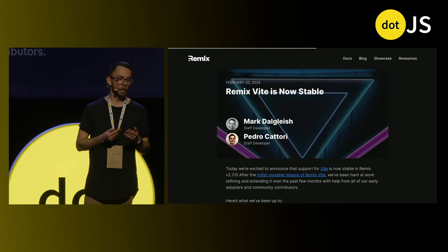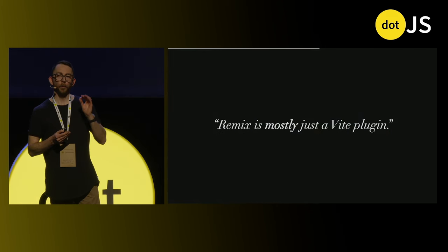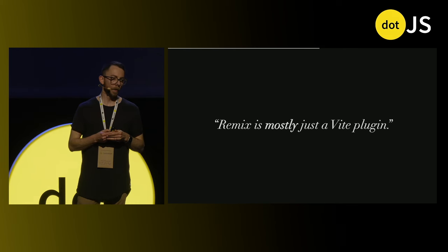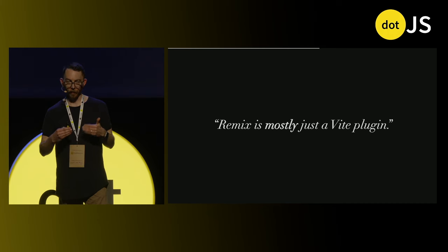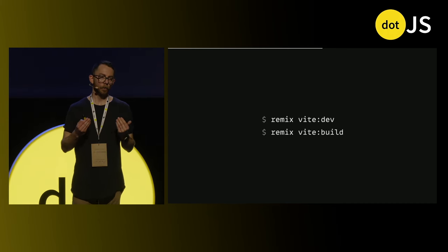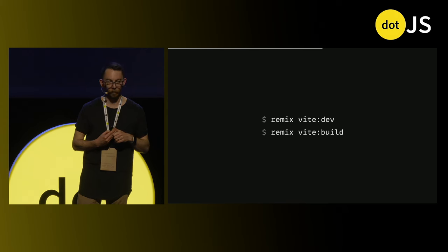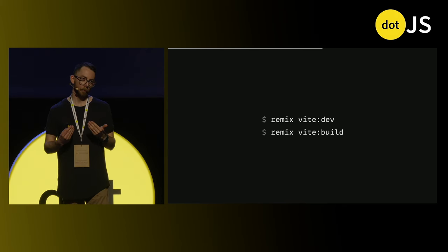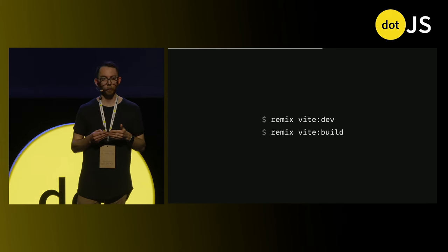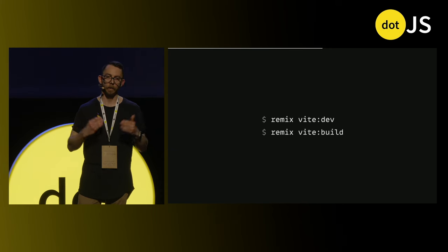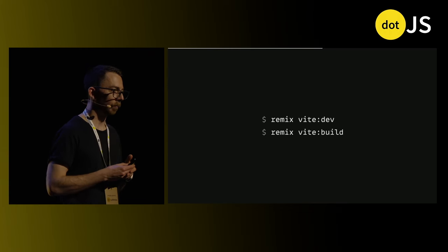When we announced that Remix Vite was going stable in February of this year, we did have to go back on this a little bit. We stayed pretty close to our original goal, which is why we said Remix is mostly just a Vite plugin. We did the build orchestration layer outside of Vite, which is why you had to still run it via the Remix CLI — you would say Remix Vite dev and Remix Vite build. Remix Vite dev was effectively a pass-through to the Vite dev server, but the build step in particular was where we needed our own custom layer sitting on top.